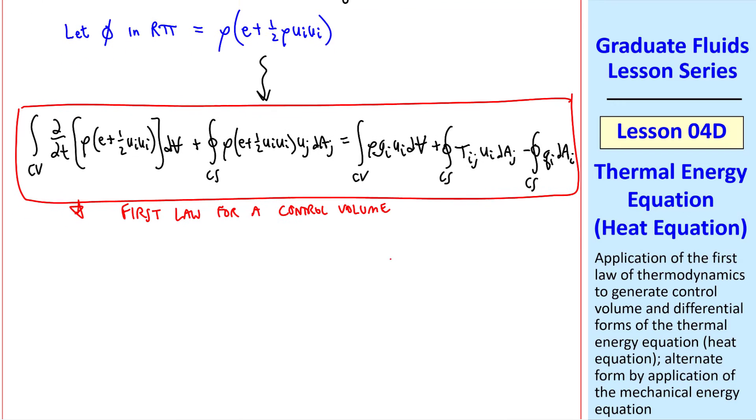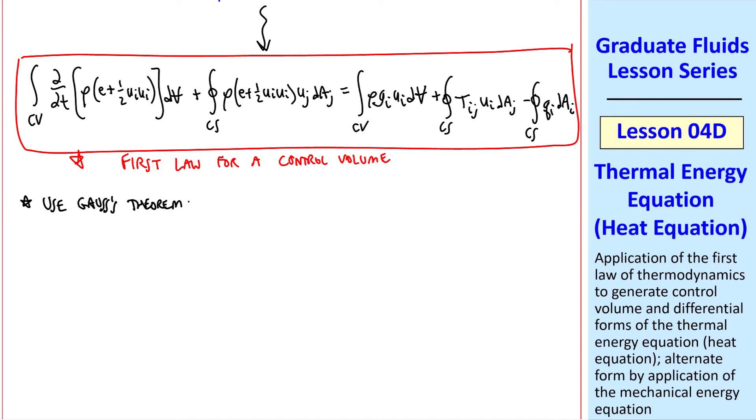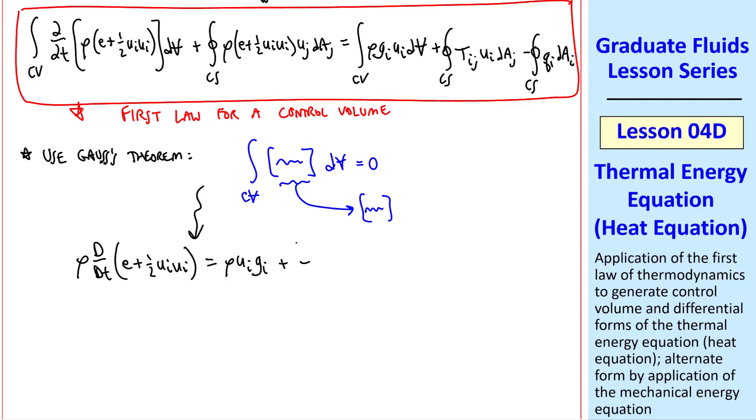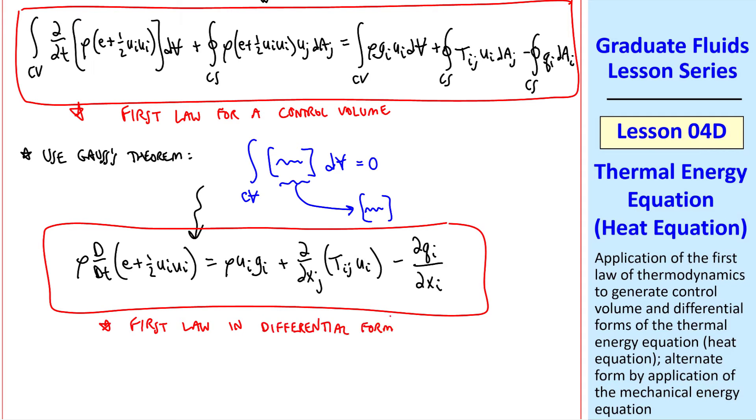To get the differential form, we use Gauss's theorem to transform these control surface integrals to control volume integrals. We can put everything under one roof, as I like to say, and end up with an equation that looks like this. And as I've argued several times before, the only way this can be true is if this quantity in brackets is zero. So again, after a little bit of algebra, we get this equation, which is our first law in differential form.